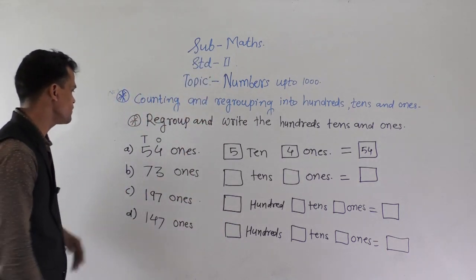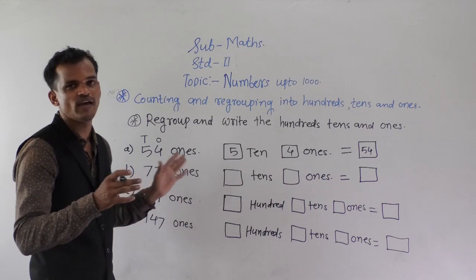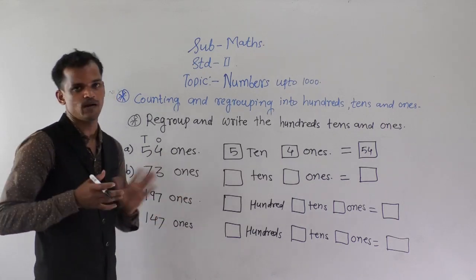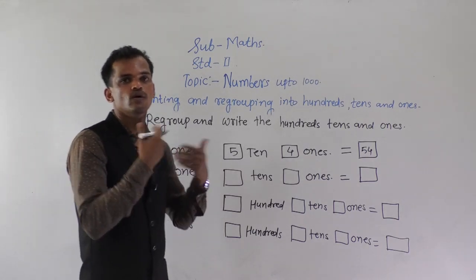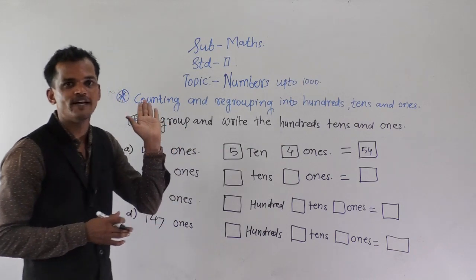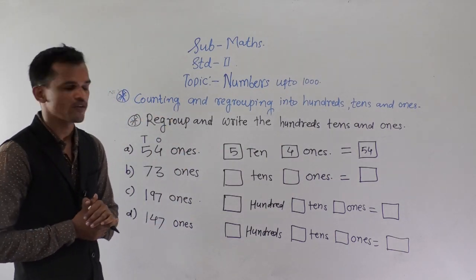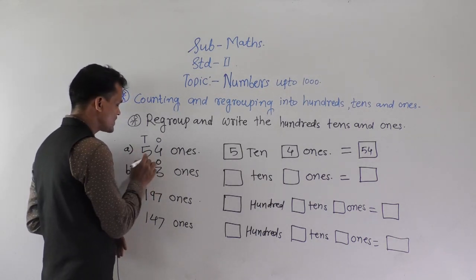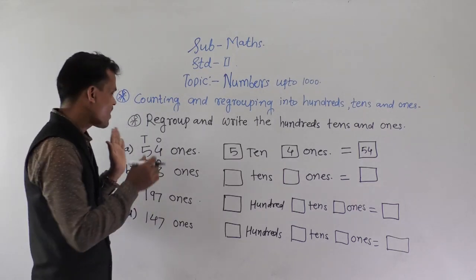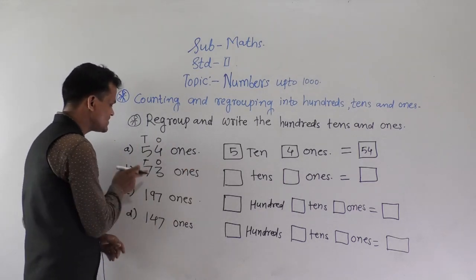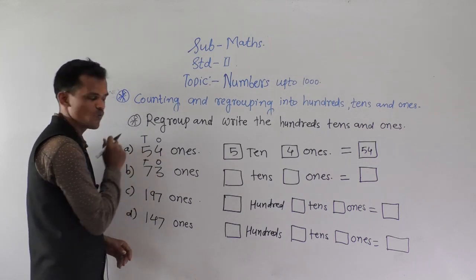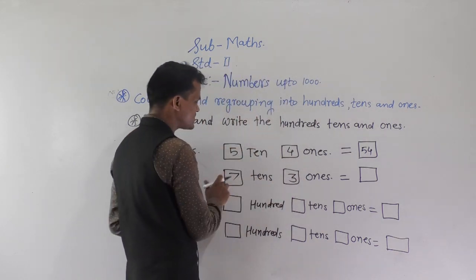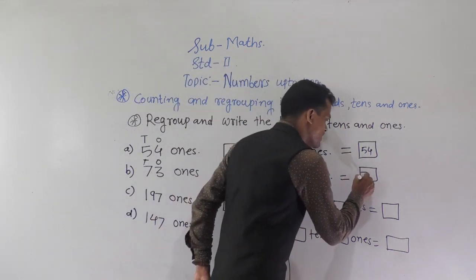See the next example: 73 ones. Suppose we have 73 marbles and we have to regroup those marbles into how many 10s and how many 1s. See the position of the digits: 3 comes at the ones place and 7 comes at the tens place. So 73 ones means 7 tens and 3 ones. The number formed is 73.